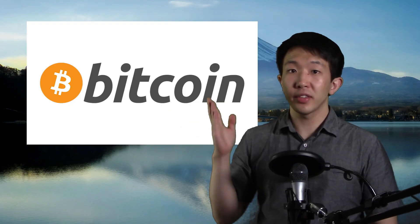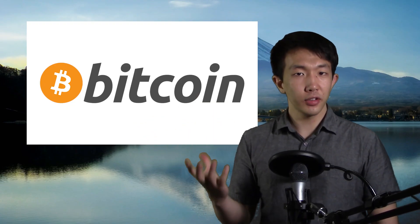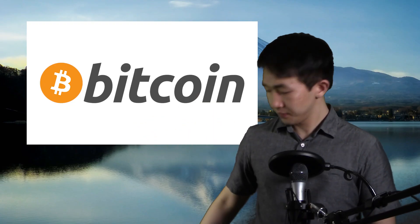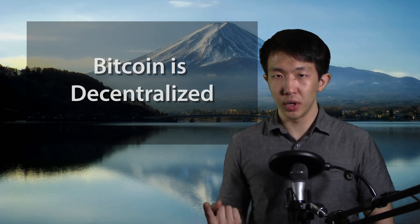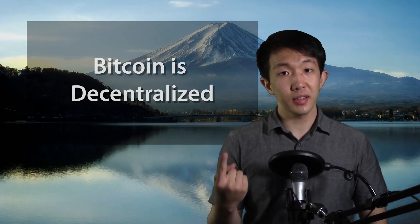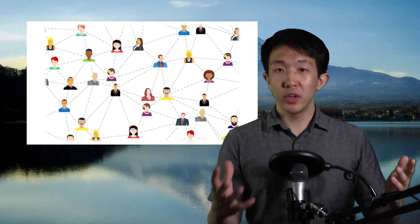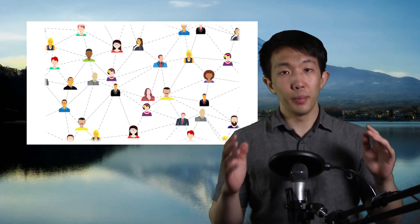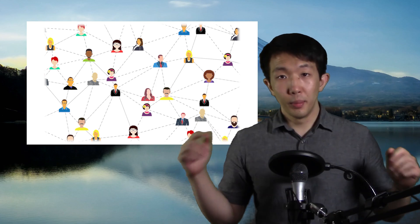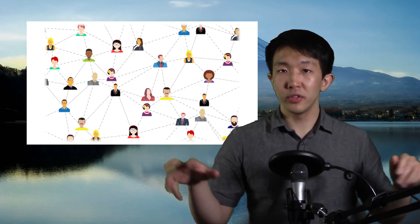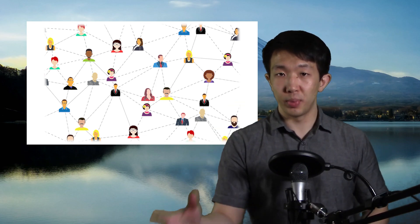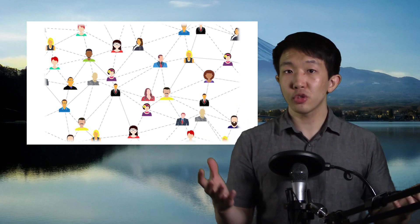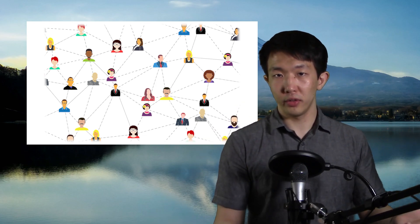Enter Bitcoin — a digital currency that solves these problems. How does it do it? First, Bitcoin is not controlled by a central authority; it is decentralized. All of Bitcoin's decisions are made by its users. A majority of Bitcoin's users have to agree in order to make any changes to Bitcoin, such as to issue extra new Bitcoins.